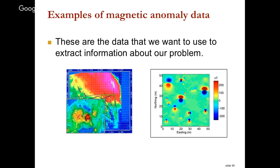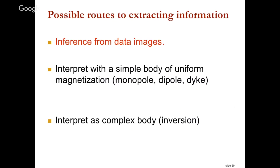Now I want to present a couple of examples of magnetic data and think about how we interpret them. We've seen these patterns before — each is a pattern due to a magnetic dipole situated in different directions, and you now understand that these signatures come in large part from remnant magnetization. So we've processed our data, got our maps, and now we want to make some inferences from those data images.